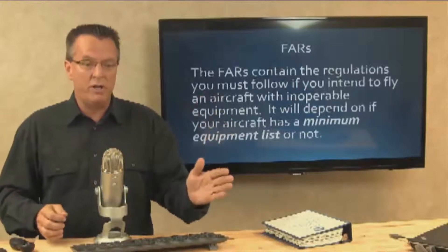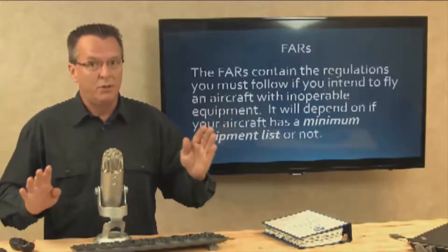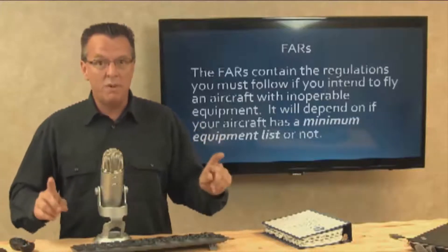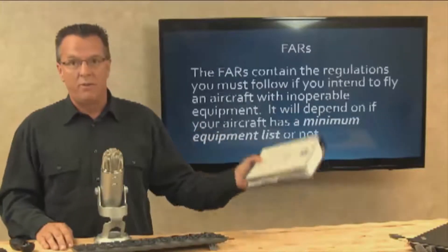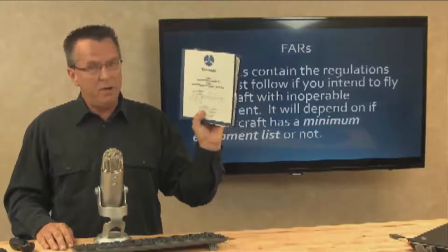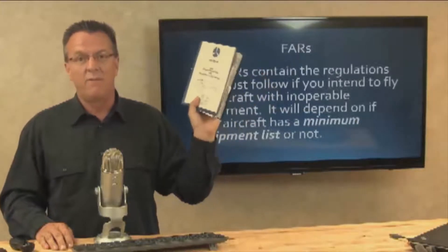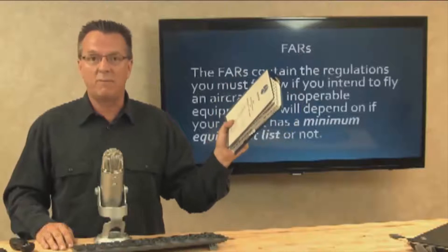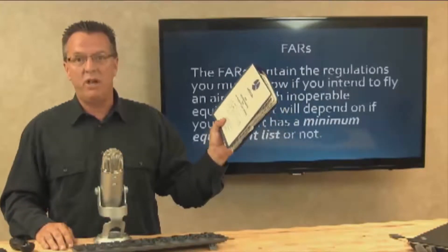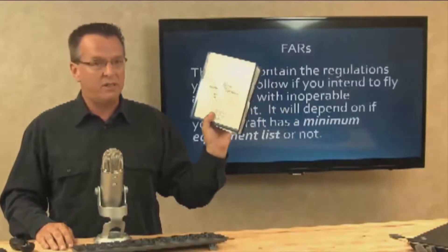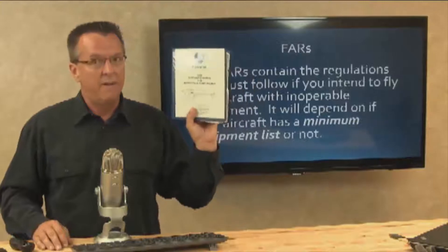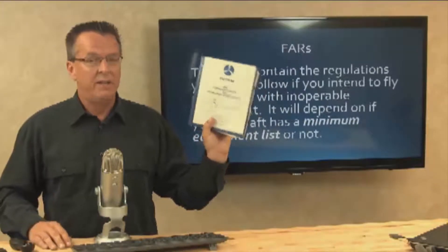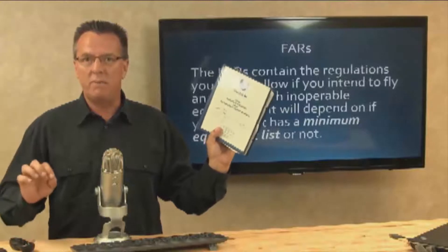If you're flying a smaller aircraft like an R22, Enstrom, or similar, in the POH of every single aircraft there is an equipment list. That equipment list comes from the factory when the aircraft is made, and everything on that aircraft is in the equipment list in the POH. If the owner or operator changes anything on the aircraft, they have to update the equipment list.